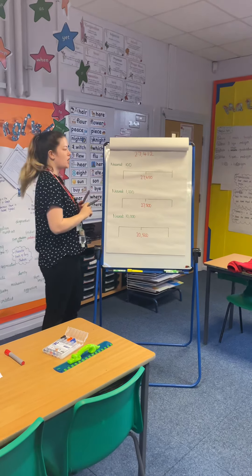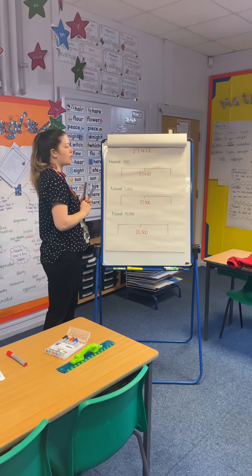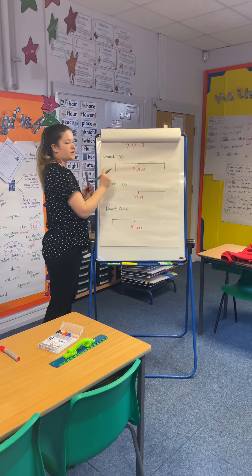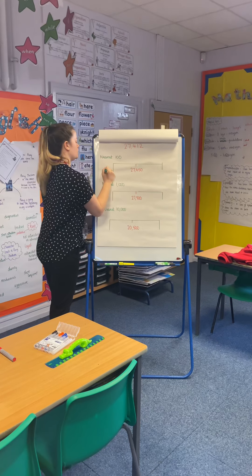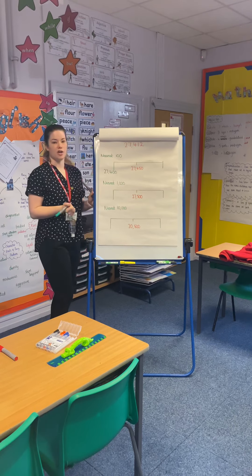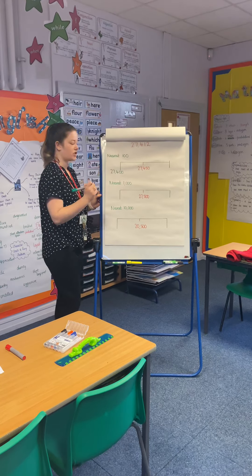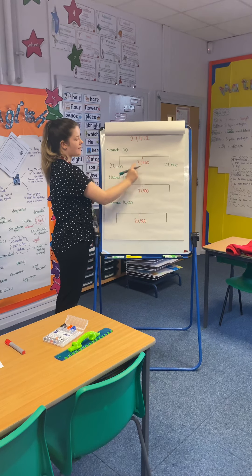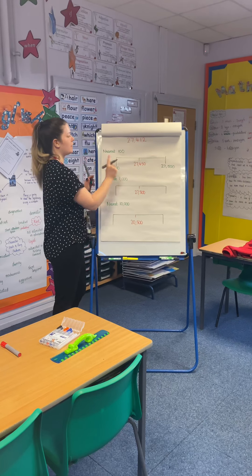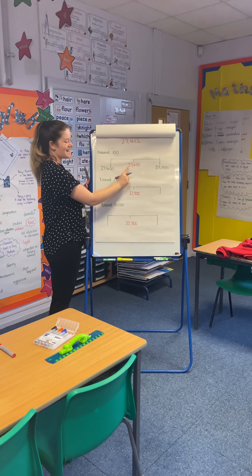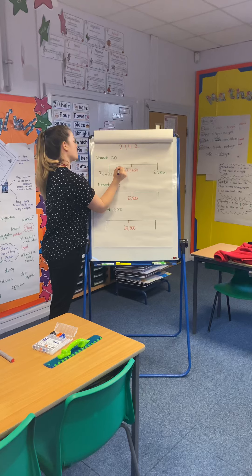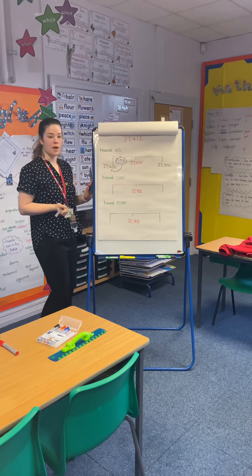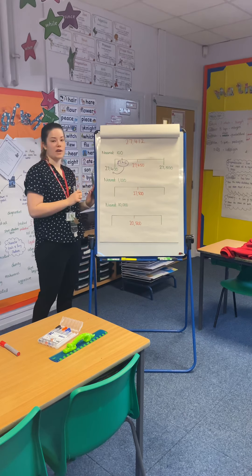We're going to have a look at another one together, but this time we have 10,000s in our number. We're now looking at 27,412. If I'm going to round this number to the nearest 100, I need to make sure that I've got hundreds numbers on my number line. I can see that this number has 400s, so 27,400 is going to go at the start. Remember, add 100 — 400 add 100 gives me 500 — so 27,500 goes at the end. 27,450 is halfway between those two numbers. So 27,412 — I can see that that's less than 27,450. I would mark that around here on my number line. I can see that it's closer to 27,400, so rounded to the nearest 100 it is 27,400.